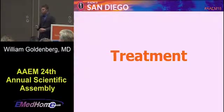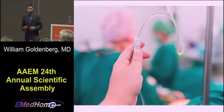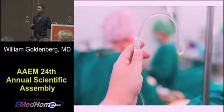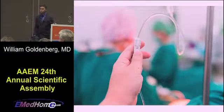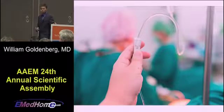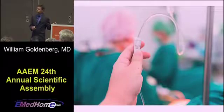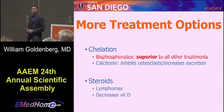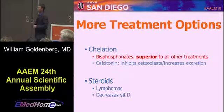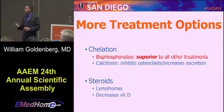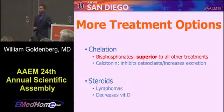Let's talk about treatment. You're going to give aggressive fluid hydration — multiple boluses of normal saline — targeting a urinary output of 100 to 200 cc per hour. Once they're euvolemic you can give a diuretic such as Lasix, but make sure your diuretic will excrete calcium with it. Bisphosphonates are the gold standard and superior to all other treatments; 60 to 90% of patients will obtain a normal calcium level within one week of starting them. Calcitonin can also be used, but it's temporary — it only lasts about a week and will lower the calcium level by approximately 1.0.